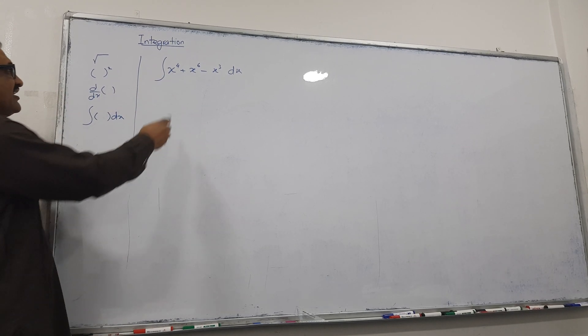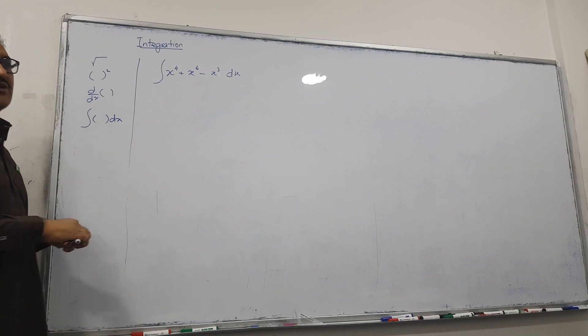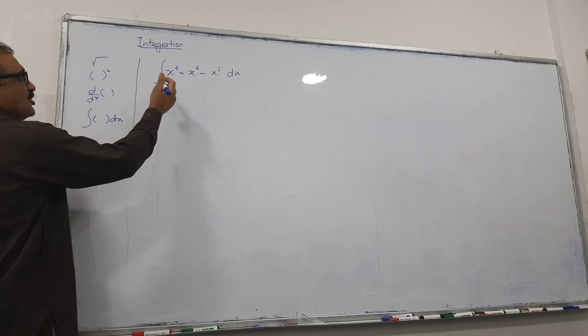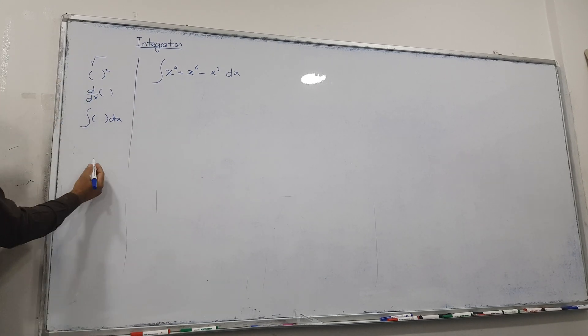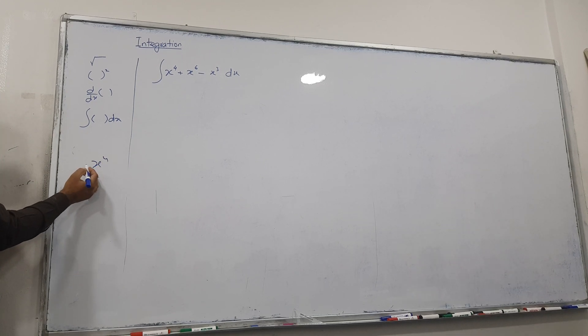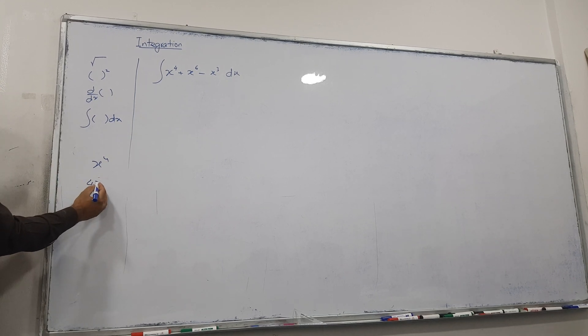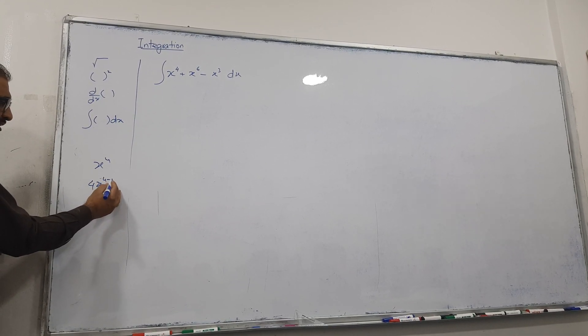For example I want to integrate this one, so I will put sign of integral and dx. What is the rule? Total reverse process of differentiation. So normally let's talk about differentiation. If I say differentiate x^4, first you bring power down multiply, multiply 4, and then you decrease power by 1. Am I right or not?